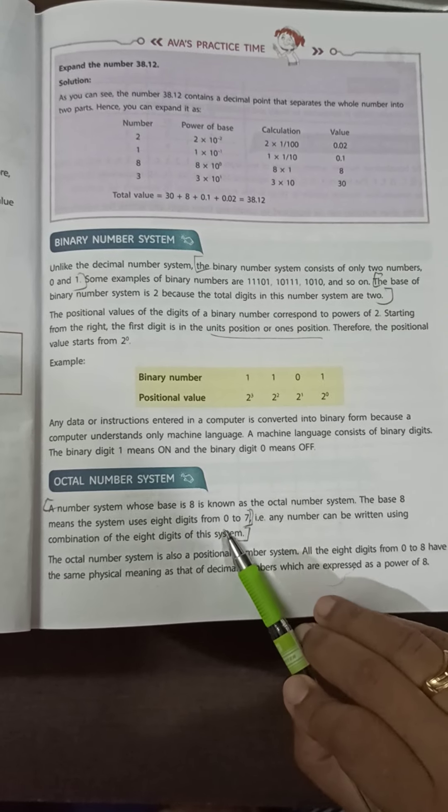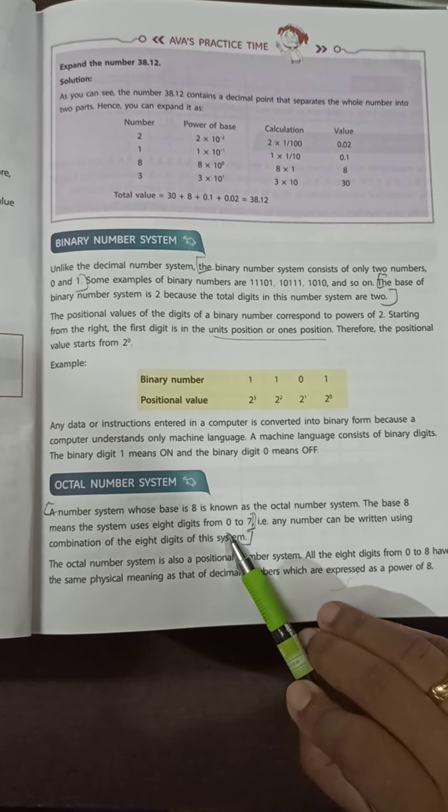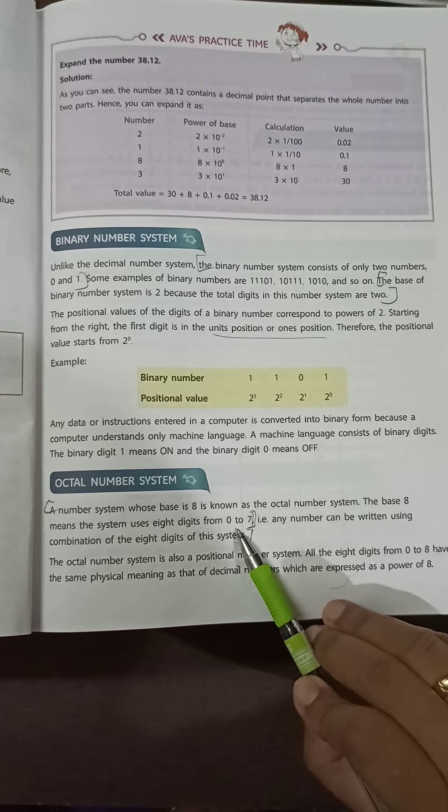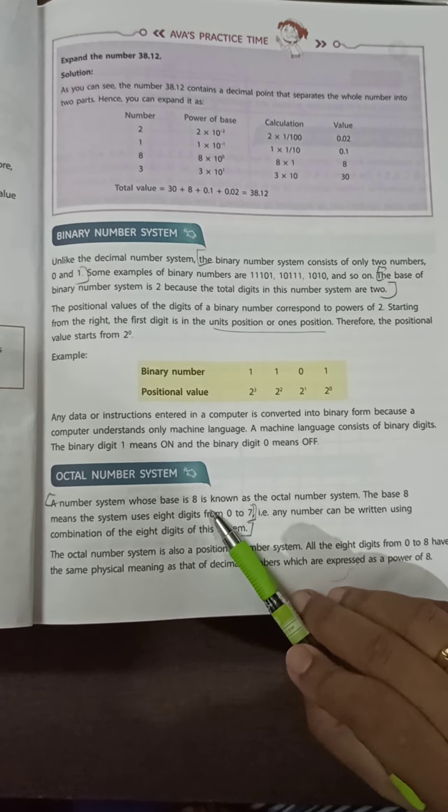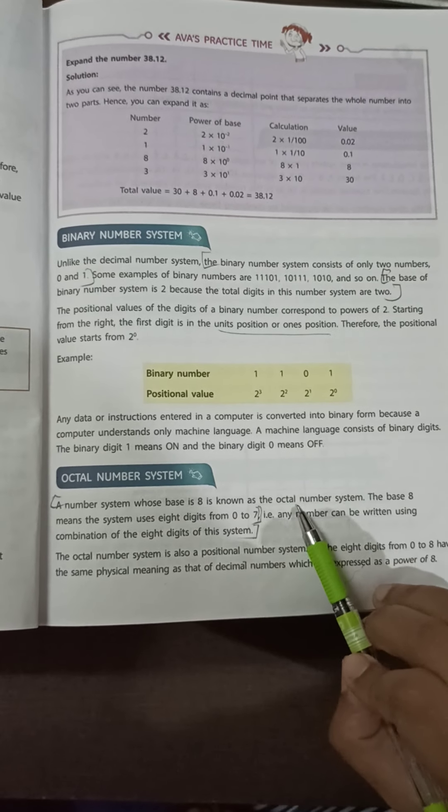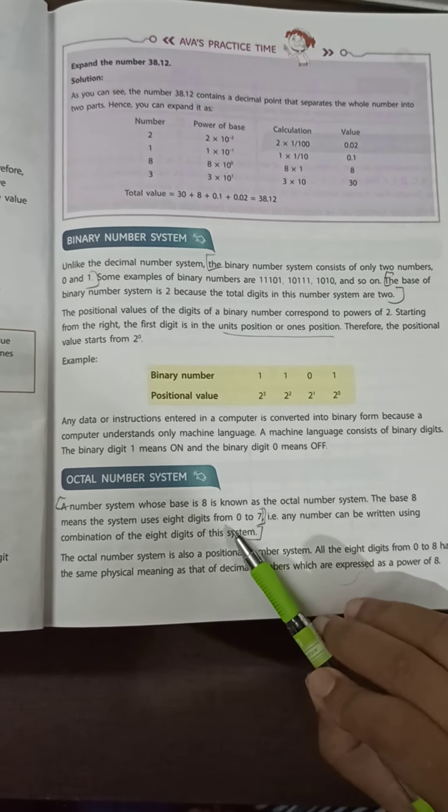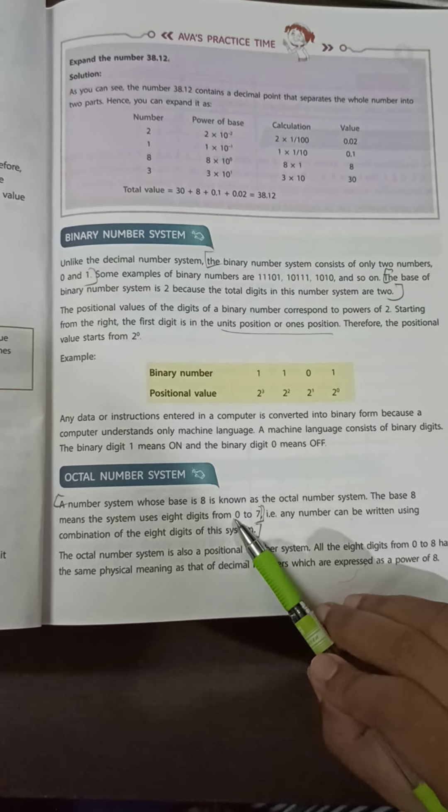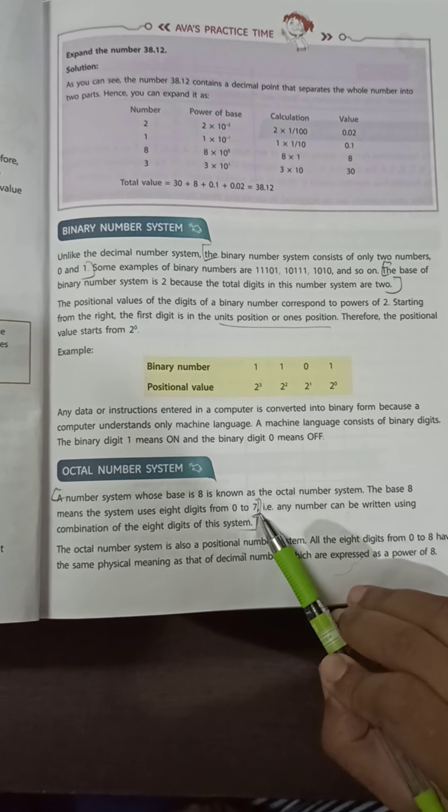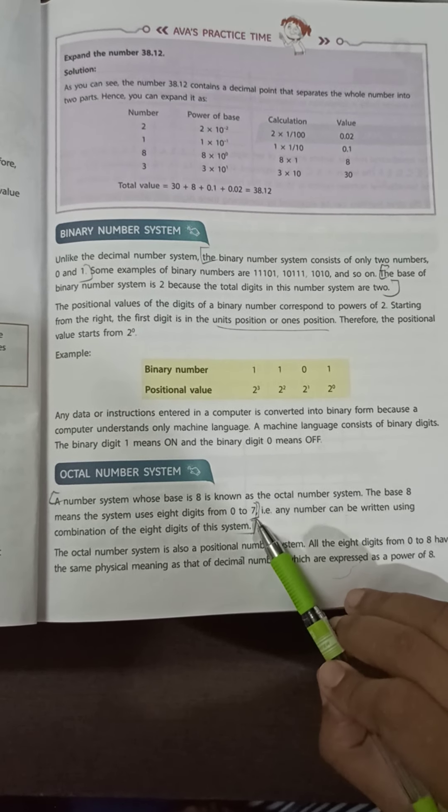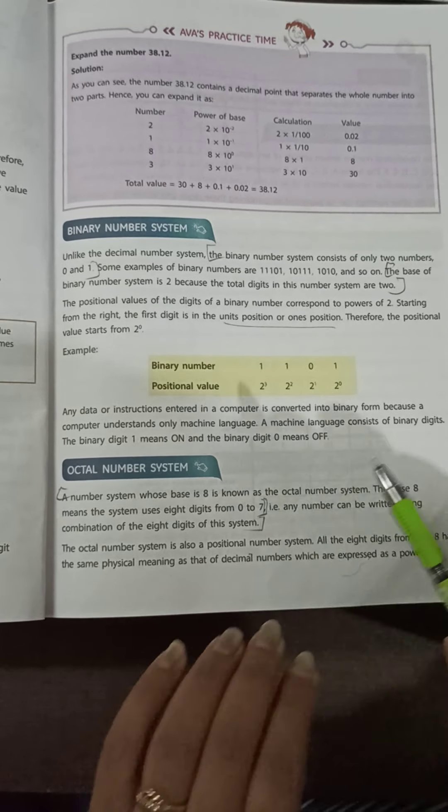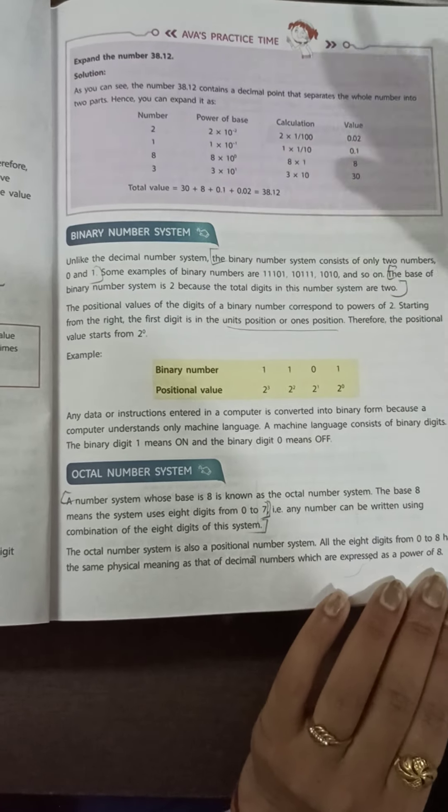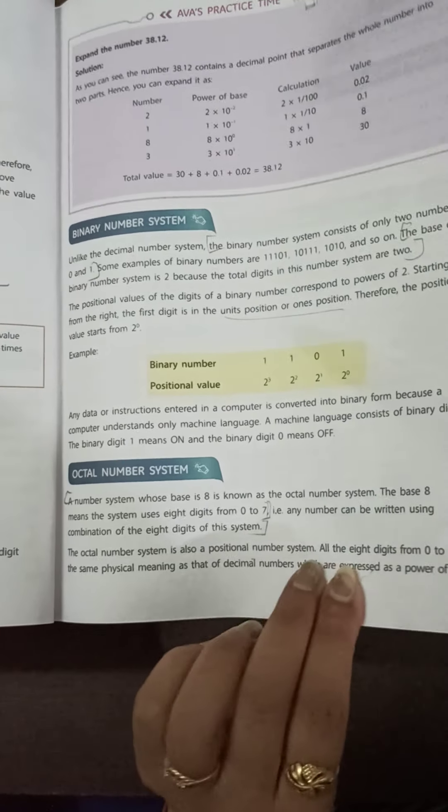The next one is octal number system. Octal number system, whose base is 8, is known as octal number system. In octal number system, you use digits 0 to 7, a total of 8 numbers. It is represented by 8 digits.